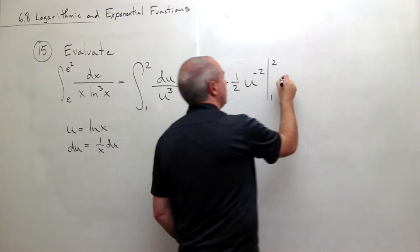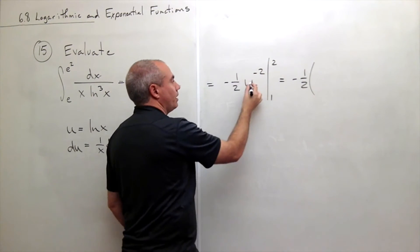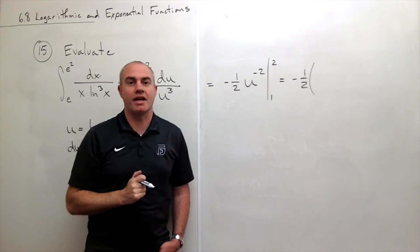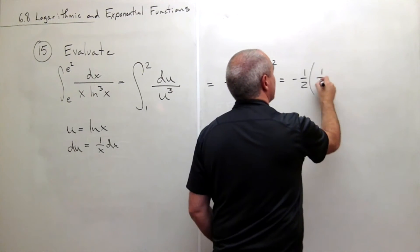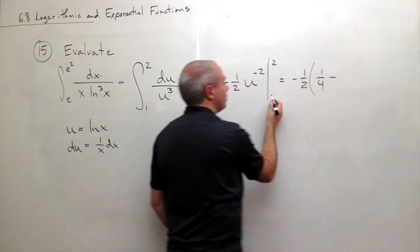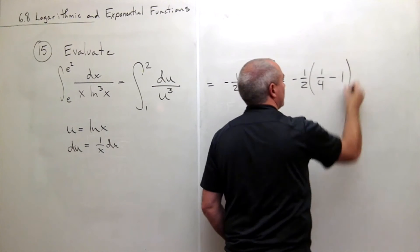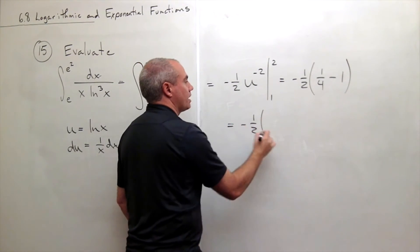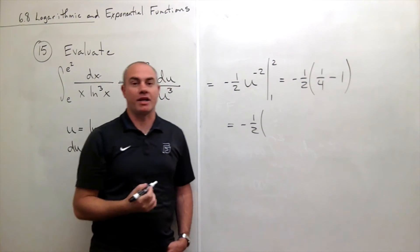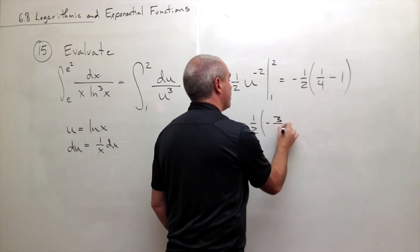Let's plug it in. I get minus 1 half times, if I plug in 2 I get 2 to the negative 2 which is 1 fourth minus, plug in 1 I get 1 to the negative 2 which is just 1. So what we're left with here is minus 1 half times 1 fourth minus 1. 1 fourth minus 1 is negative 3 fourths.